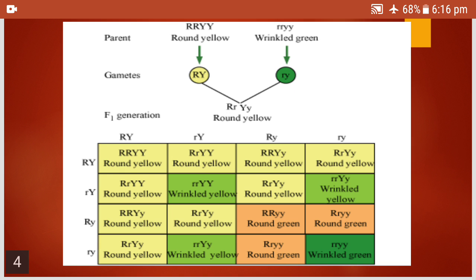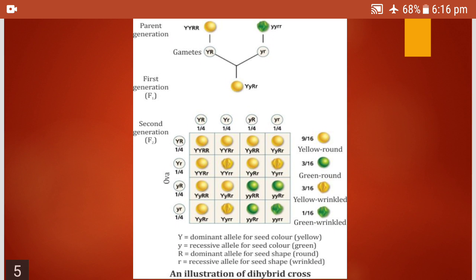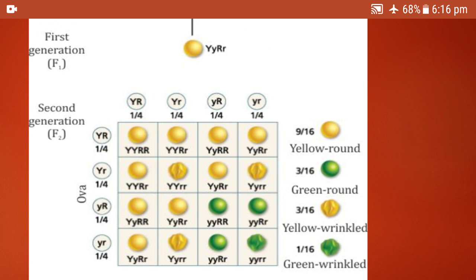We will not write the genotypic ratio — it becomes a very long ratio. So in dihybrid cross, we will only learn that the phenotypic ratio is 9:3:3:1. Remember that. Looking at the same chart again, you can see in the corner: nine out of 16, three out of 16, three out of 16, and one out of 16 — giving the phenotypic ratio of 9:3:3:1. The genotypic ratio you need not learn.